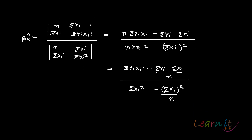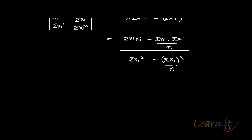This was our beta 2 hat estimator: summation of yi·xi minus summation of yi into summation of xi upon n, divided by summation of xi squared minus summation of xi whole square upon n.